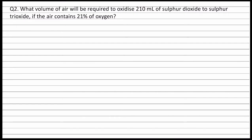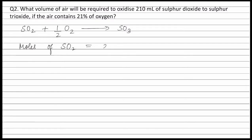The balanced equation for the oxidation of sulfur dioxide to sulfur trioxide is SO₂ + ½O₂ → SO₃. According to the question, moles of sulfur dioxide is equal to volume of sulfur dioxide, that is 210 ml, divided by molar volume, that is 22.4 × 10³ ml.